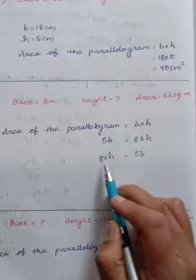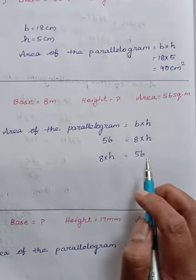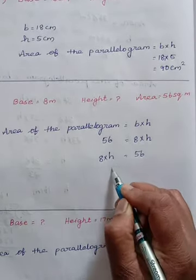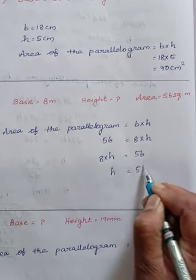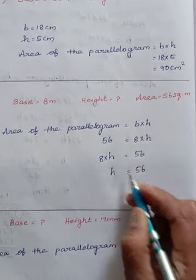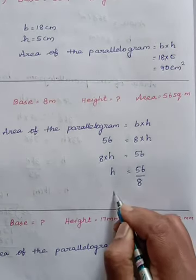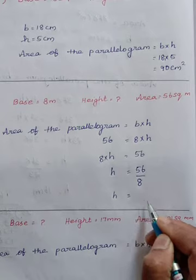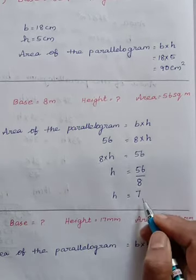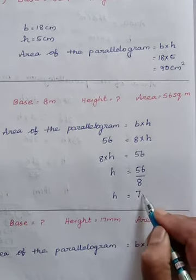If I take like this, both are same meaning. No need to change any signs. So the unknown value h equals 56. 8 is in the terms of multiplication. When taken to other side becomes division. So h equals 56 divided by 8, which is 7. So 7 m.